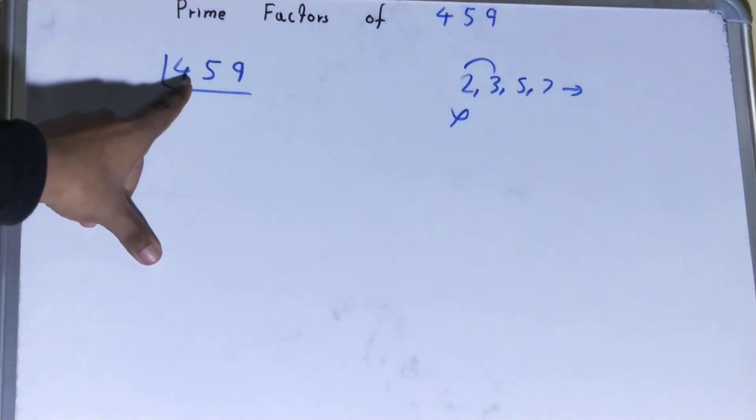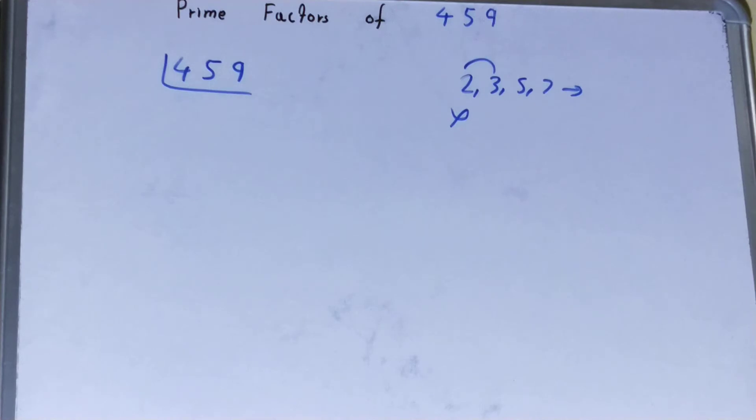3 times 153 is 459, so yes it is divisible by 3. So divide it.